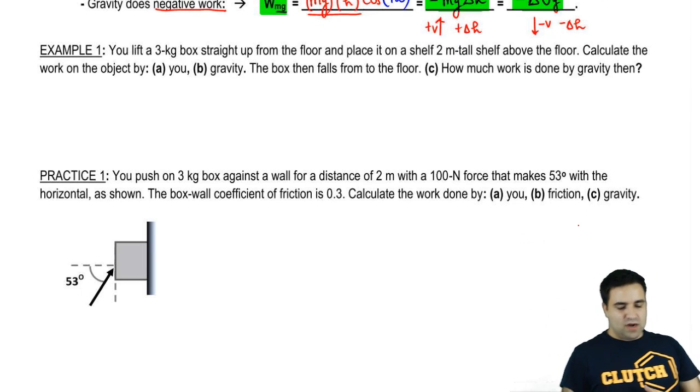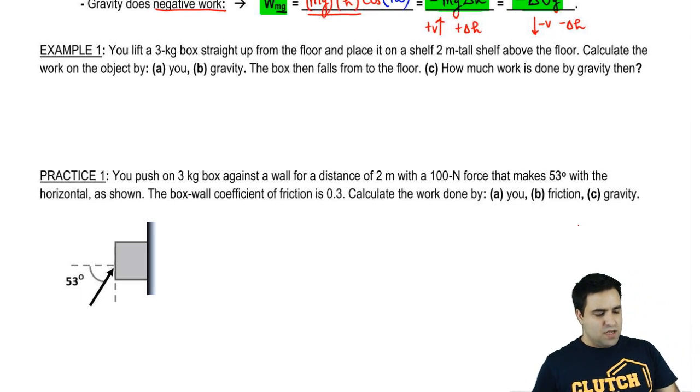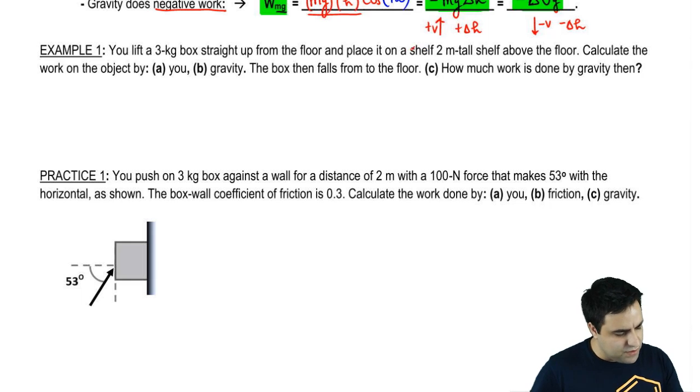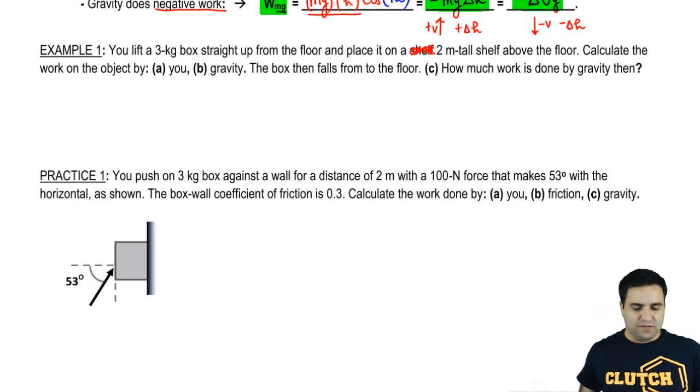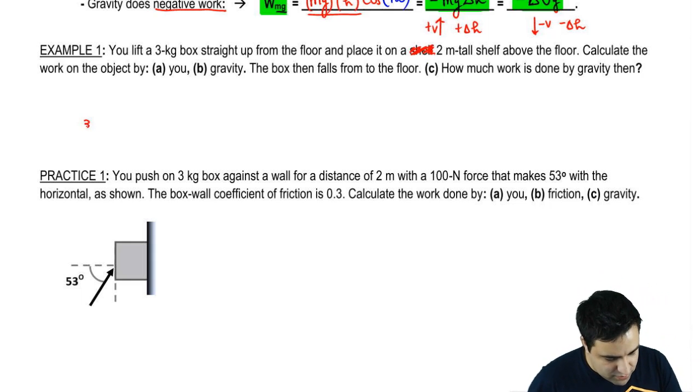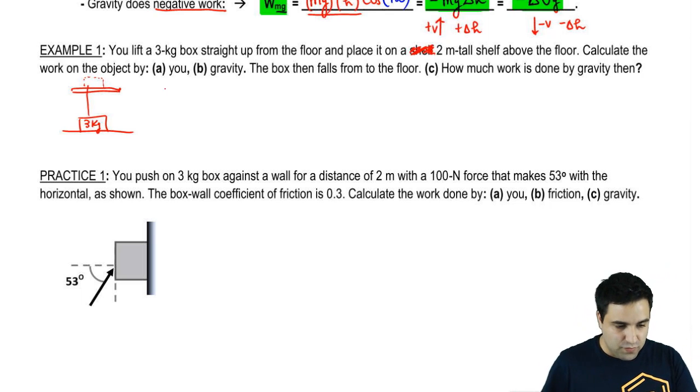So you lift a 3-kilogram box straight up from the floor and place it on a shelf, two meters, on a shelf, two meter tall shelf. There's an extra shelf here. Two meter tall shelf above the floor. So let's say there's a 3-kilogram book here, box rather. It's on the floor. And let's say over here there is a shelf. And you're going to move this guy and put it over here. I want to know how much work did you do? And this is very straightforward.